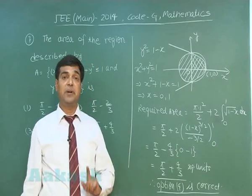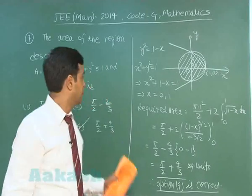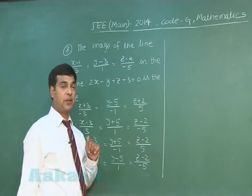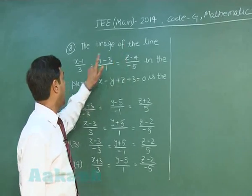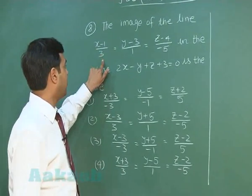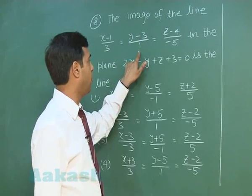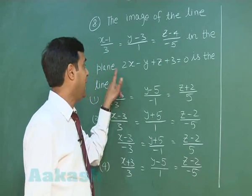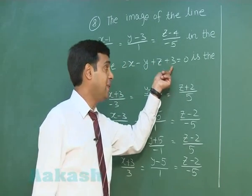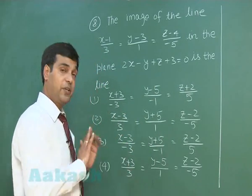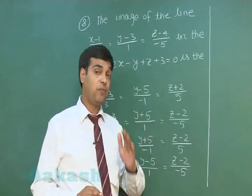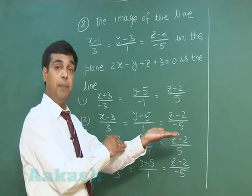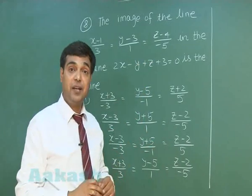Let us move to question number 8. The image of the line (x-1)/3 = (y-3)/1 = (z-4)/(-5) in the plane 2x - y + z + 3 = 0 is the line — four options are given. When we require the image of the line in the plane, we need to check out certain cases, such as whether the line is intersecting, perpendicular, or parallel to the plane.